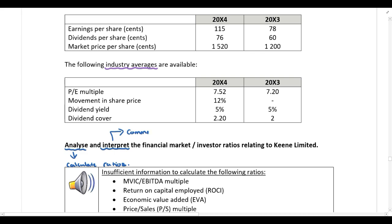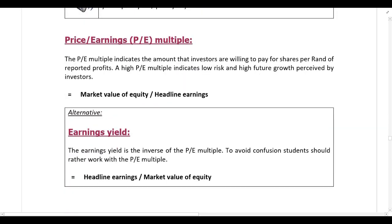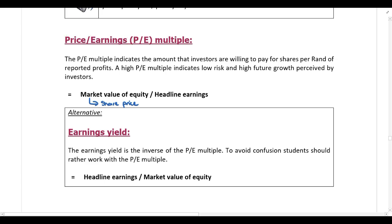The first ratio you need to be able to calculate is the price earnings multiple. We perform this calculation by taking the market price of equity — in other words the share price — and dividing by headline earnings. The formula comes directly from the name: share price divided by headline earnings. This ratio indicates the amount that investors are willing to pay for shares per rand of reported profits.